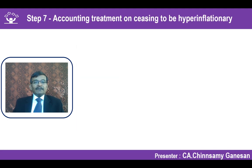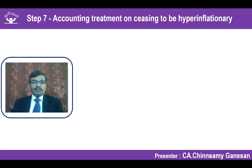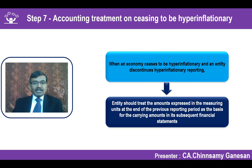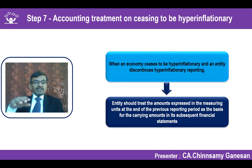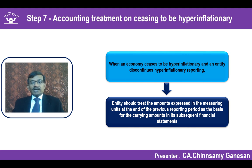Step 7: When an entity ceases to operate in a hyperinflationary economy, the accounting treatment under Ind AS 29 should be stopped. The carrying amounts as restated under Ind AS 29 in the final hyperinflationary period become the carrying amounts for subsequent financial statements. You do not go back retrospectively to reverse losses already accounted for; the opening balance for the subsequent period is taken from the last Ind AS 29 restated closing balance.